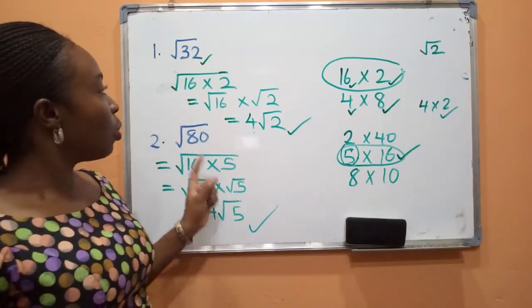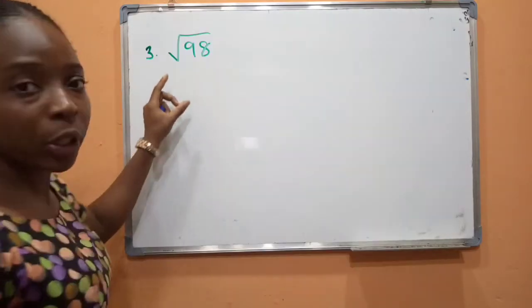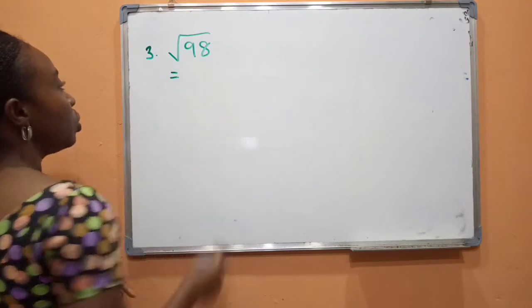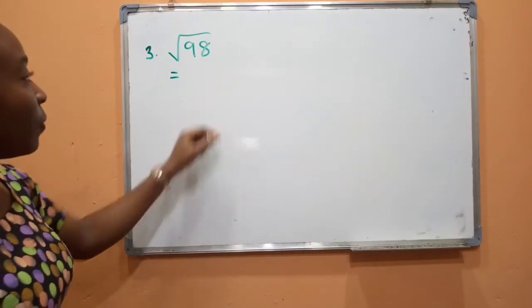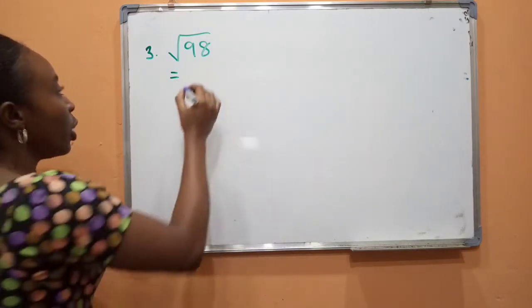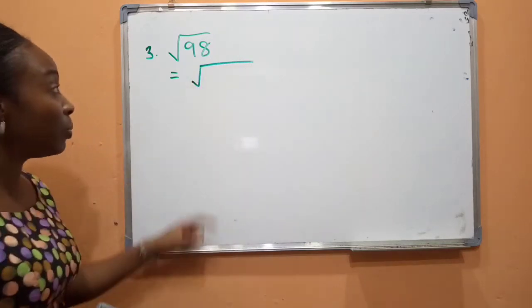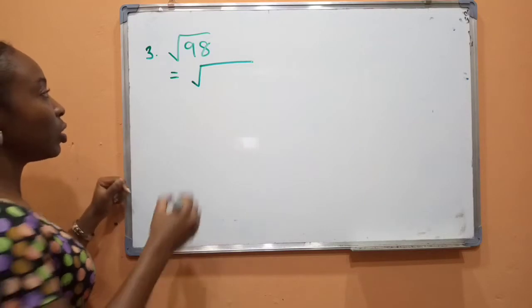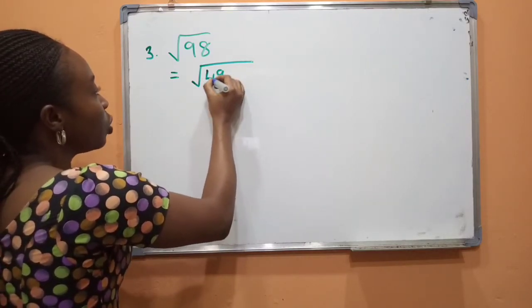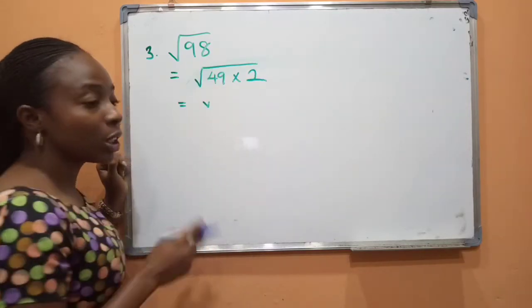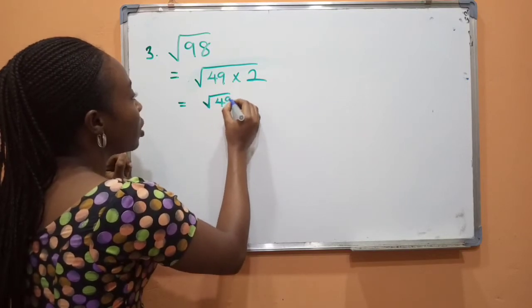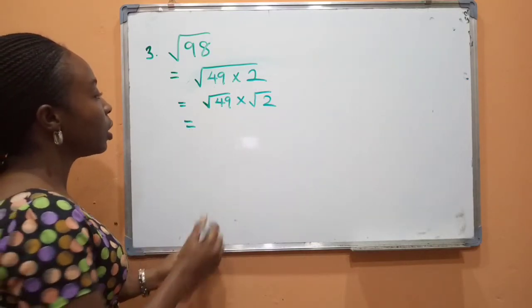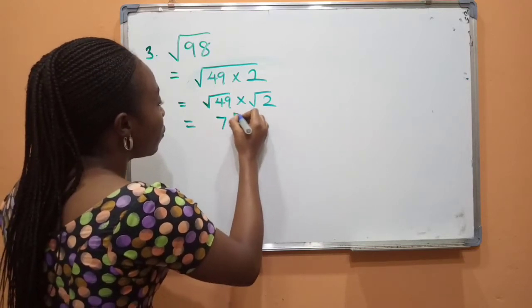We've done two examples, so let's take one more. Here we have root 98. How do we convert this? Just like the previous examples, we need two numbers: one a perfect square and the second not a perfect square, and the second one that is not a perfect square should not be further simplified. So we have 49 and 2 as the two factors. This can also be written as the square root of 49 times the root of 2. What is the square root of 49? The square root of 49 gives us 7. So we have 7 root 2.